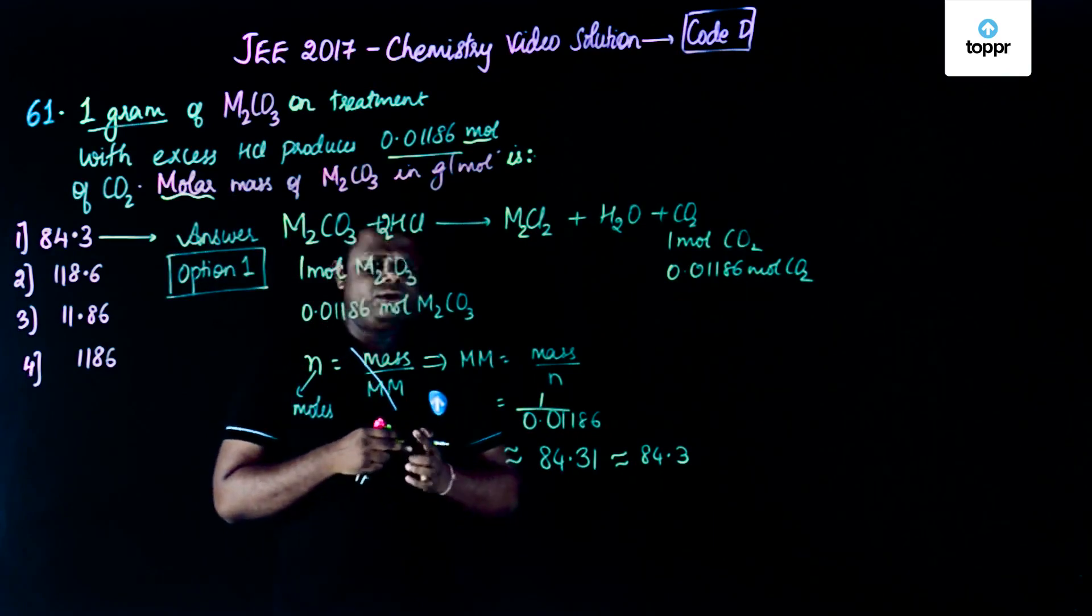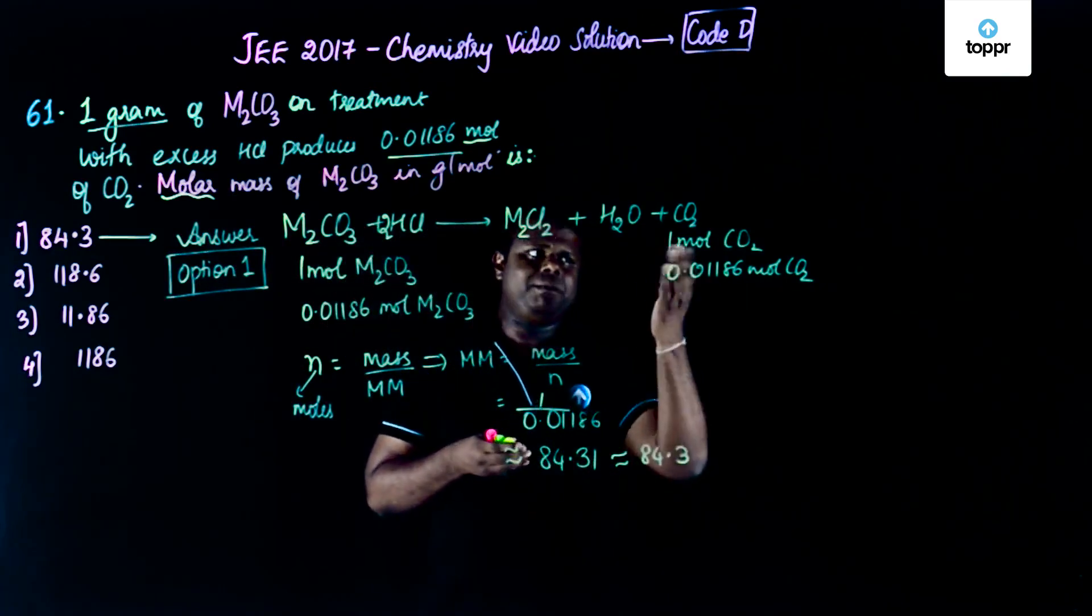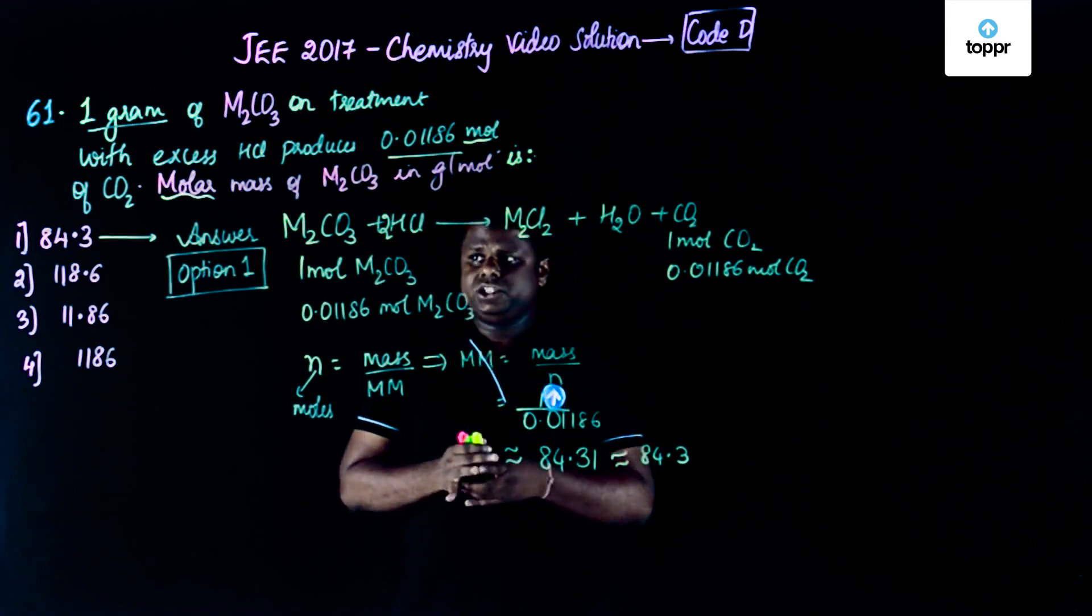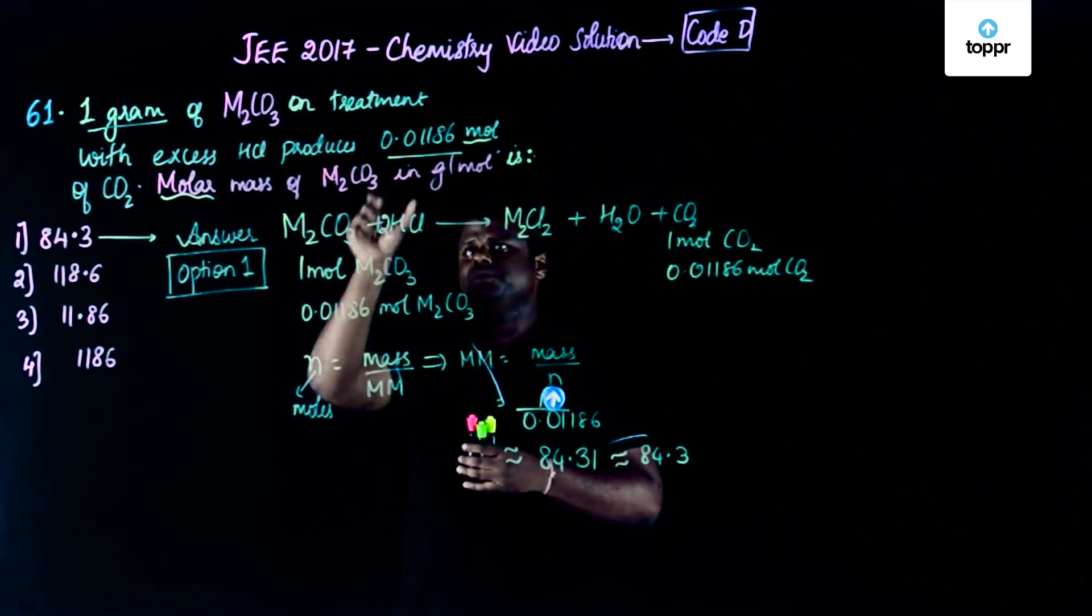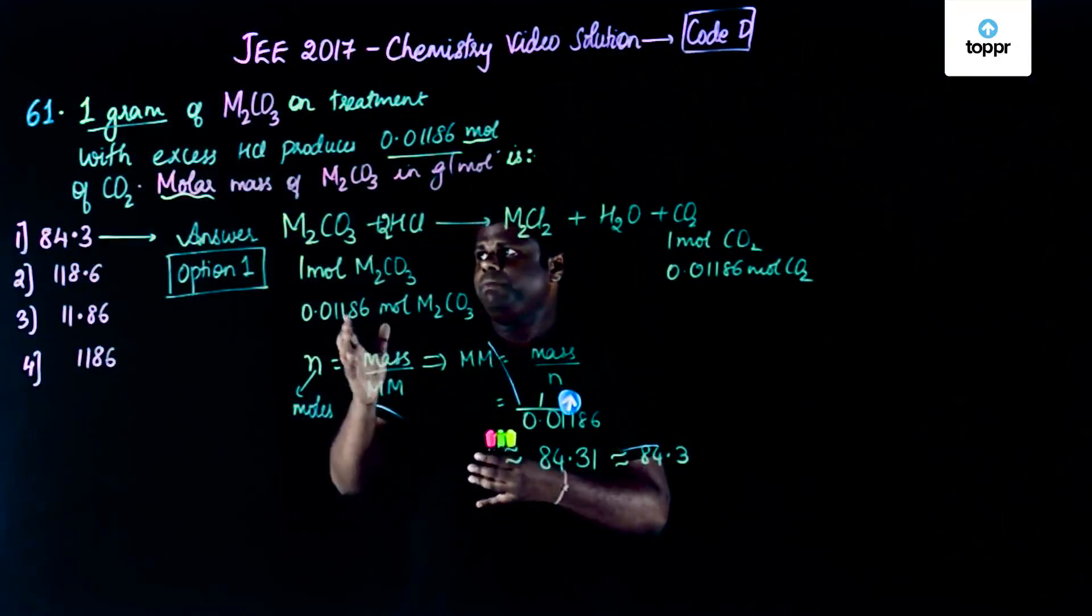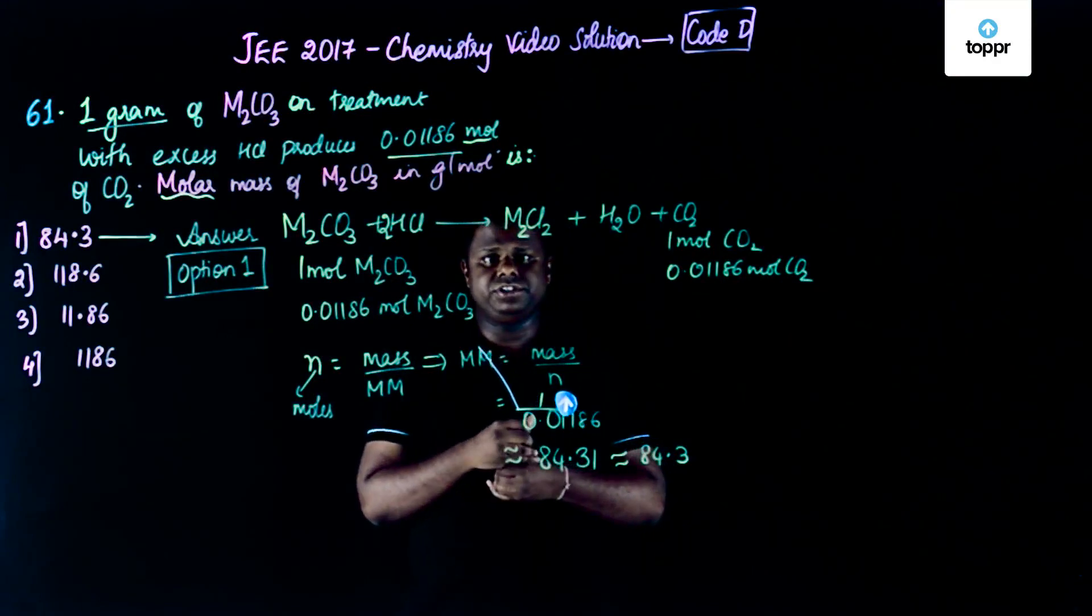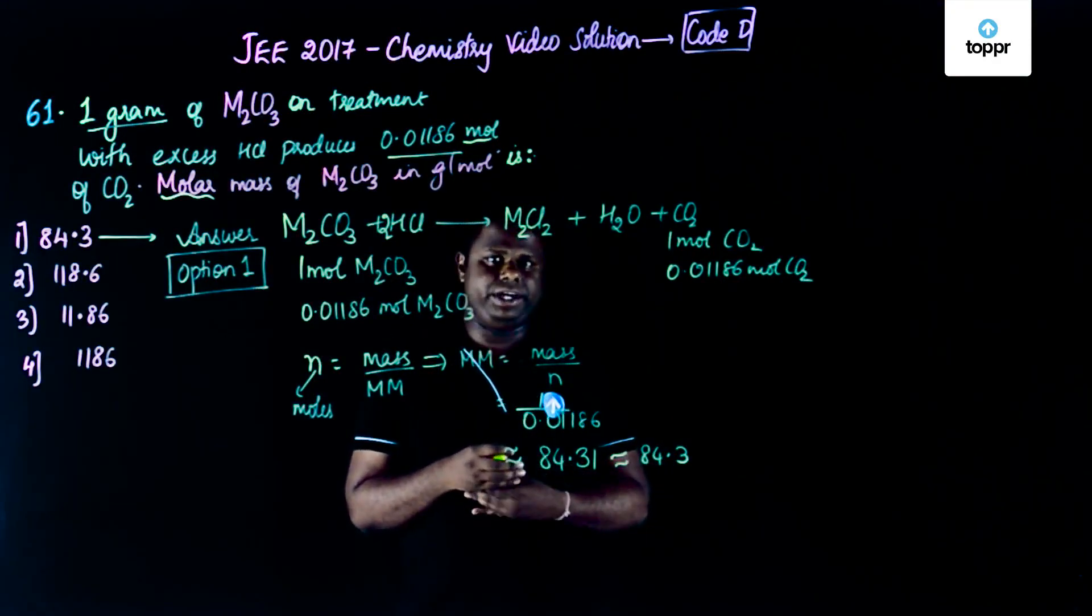So this is a very simple method. You could use another method like going for mass calculations but that would actually complicate it more. Better to use the mole calculation because moles have been asked. It's better to use the mole calculation instead of mass calculation so that complexity could be reduced.